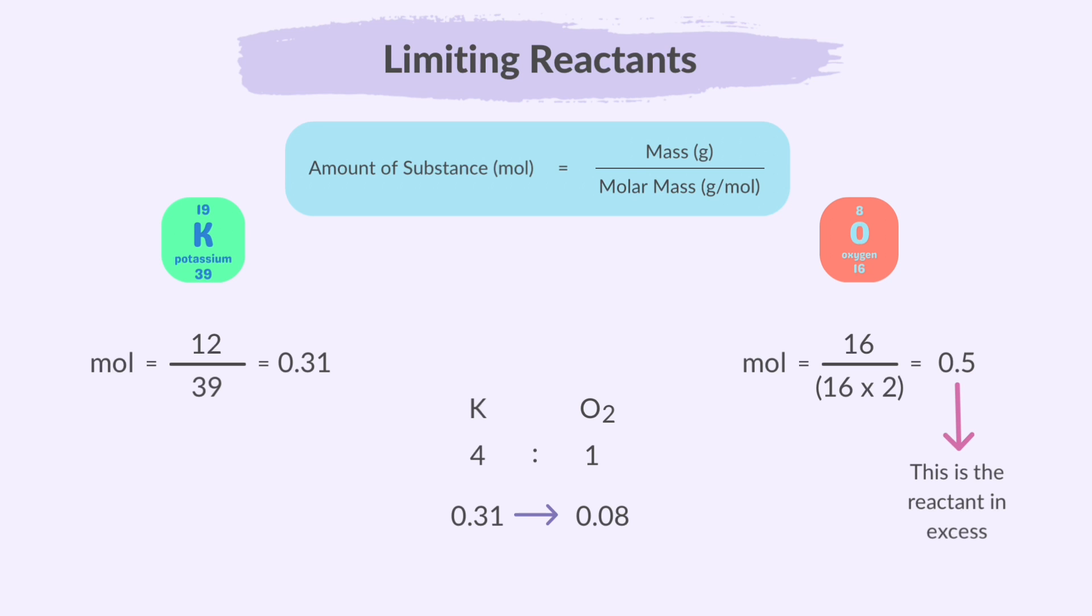This means that oxygen is the reactant in excess. So, potassium is the limiting reactant. Potassium is the limiting reactant because if there was more of this reactant, then more K2O would have been formed with the existing O2.